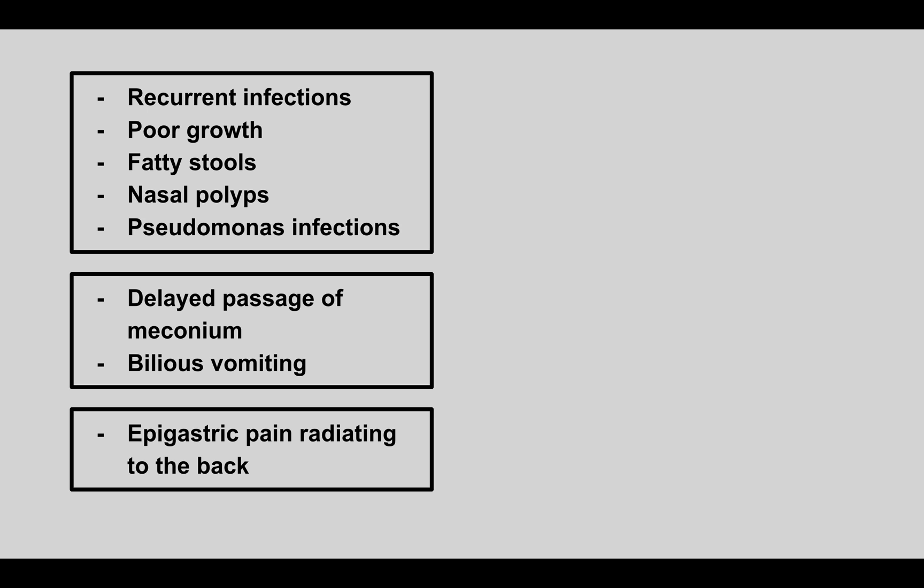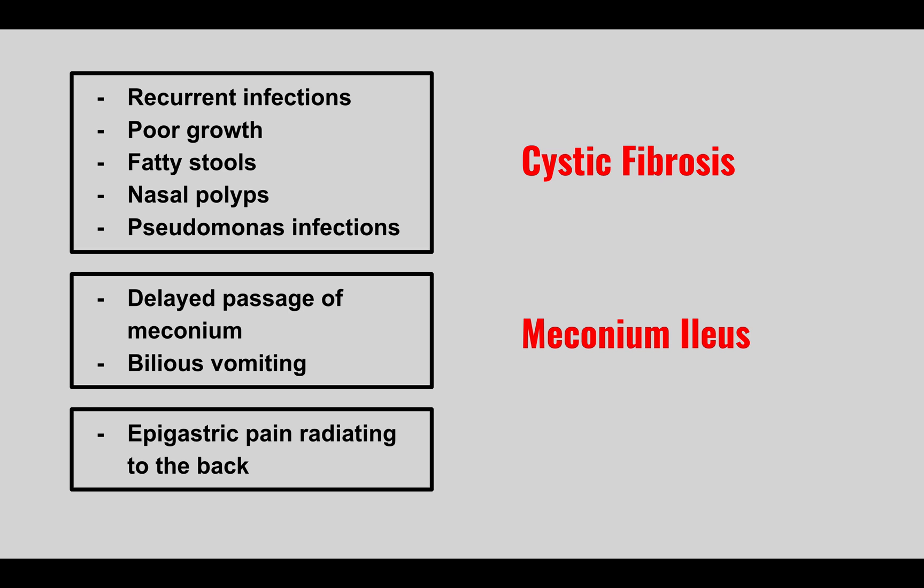The next condition: a patient with recurrent infections, poor growth, fatty stools, nasal polyps, and Pseudomonas infections. This is cystic fibrosis — a CFTR gene mutation causing an abnormal chloride channel, leading to thick secretions throughout the body, plugging the lungs and causing recurrent infections. We also get fat-soluble vitamin deficiencies — vitamins A, D, E, and K. In newborns, a complication can be delayed passage of meconium and bilious vomiting, called meconium ileus — so a newborn without a bowel movement in the first few days of life may have underlying cystic fibrosis.